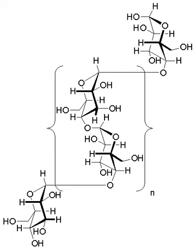In humans, glycogen is made and stored primarily in the cells of the liver and skeletal muscle. In the liver, glycogen can make up 5-6% of the organ's fresh weight, and the liver of an adult weighing 70 kg can store roughly 100-120 grams of glycogen.